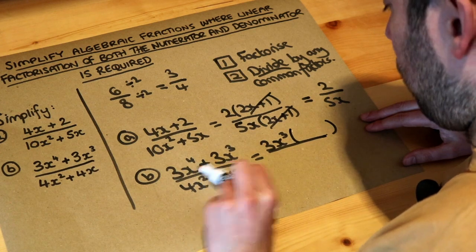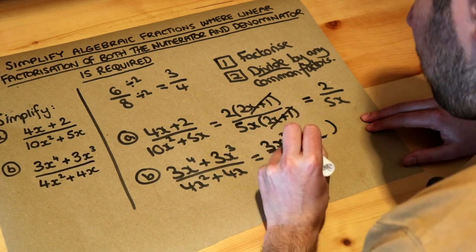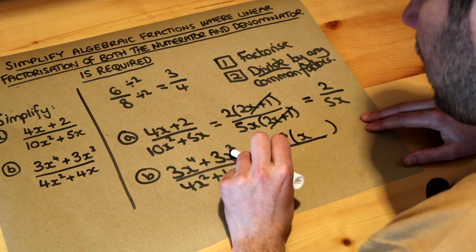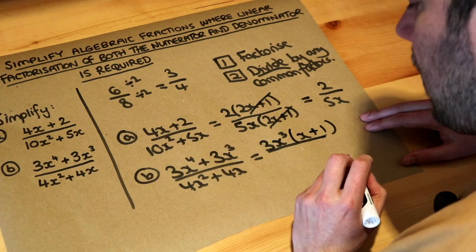3x³ times what is 3x⁴? Well it's got an additional x, because x³ times x will be x⁴. And 3x³ times what is 3x³? It's just 1 - 1 times 3x³ would just be itself.